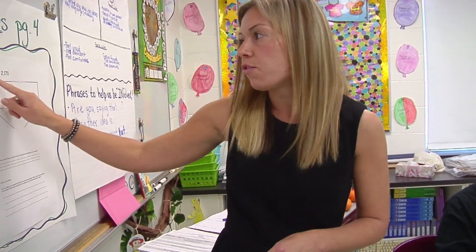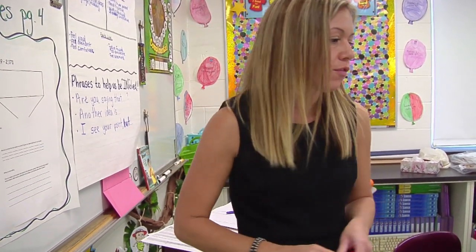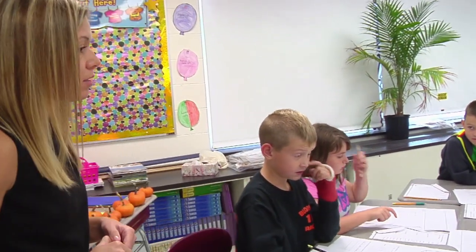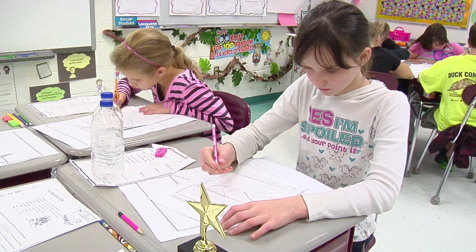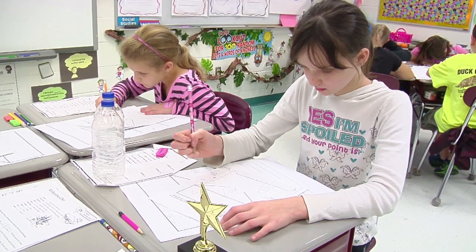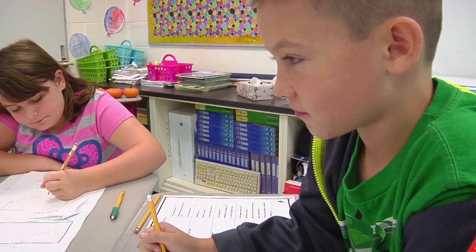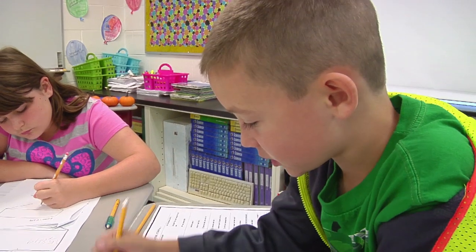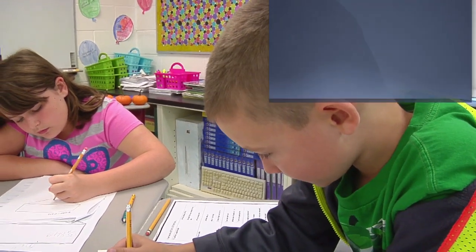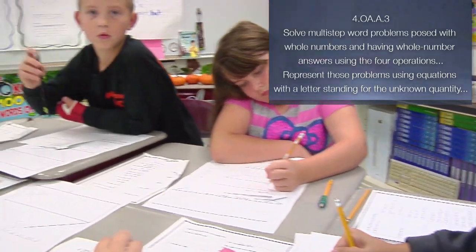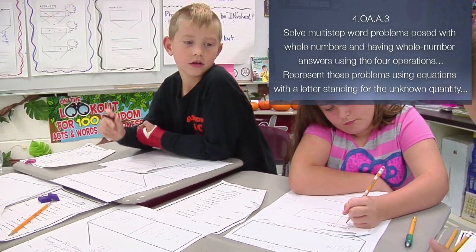On that next page where it says 4,259 minus 2,171, work together and solve it. With their work in their groups, they were able to use that same format again — using the tape diagram to help them solve the subtraction word problem. And then you have to split the bar model in half, or however you want to split it. I'm trying to make one bigger than the other.